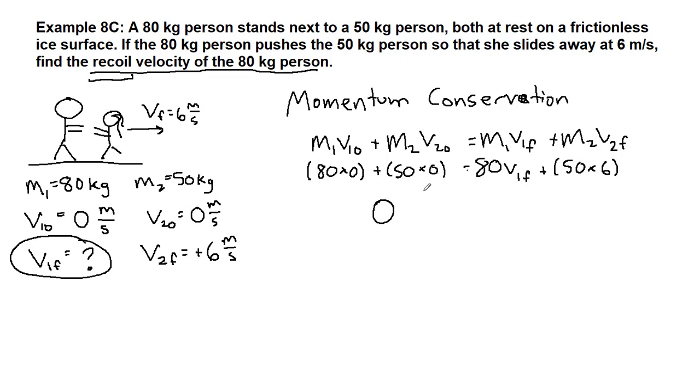On the left, we have 0. On the right, we have 80 V1 final plus 300.